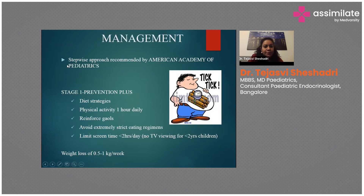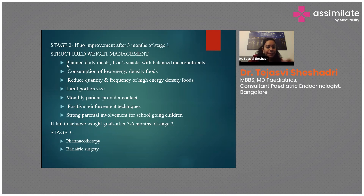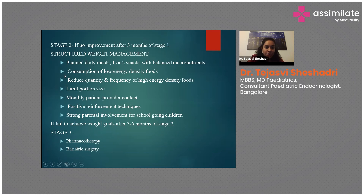Management is stepwise. Stage one involves diet strategies, physical activity, and limiting screen time, with the ideal goal of 0.5 to 1 kg weight loss per week. This is followed for a minimum of three and maximum of six months. If there is no improvement, move to stage two: a structured weight management protocol where a nutritionist and pediatric endocrinologist plan every meal with balanced macronutrients, reduce high-calorie-density foods, limit portion sizes, and use positive reinforcement with monthly follow-up.